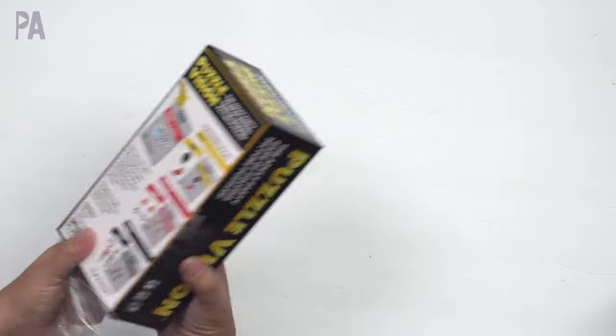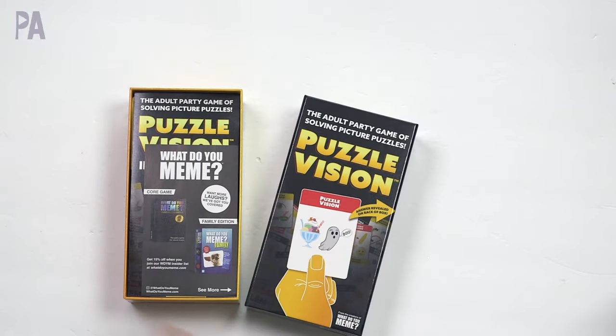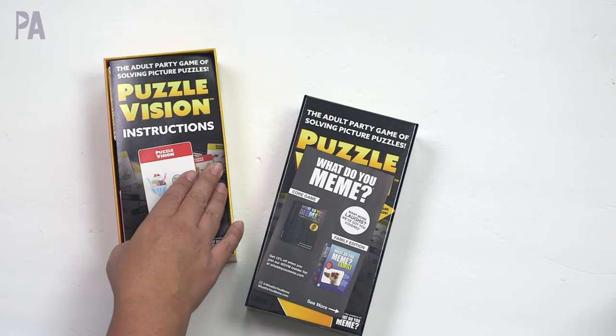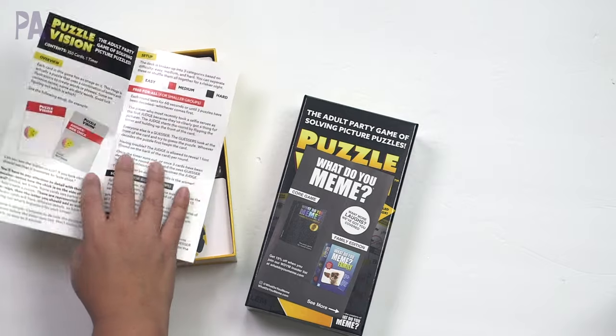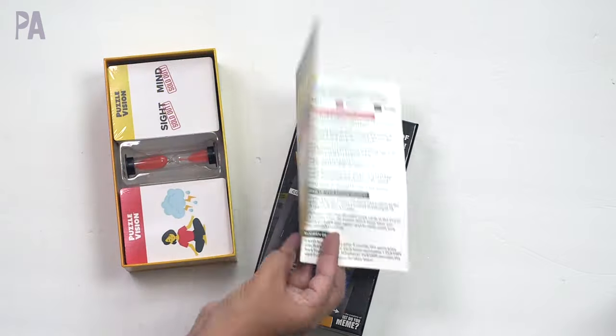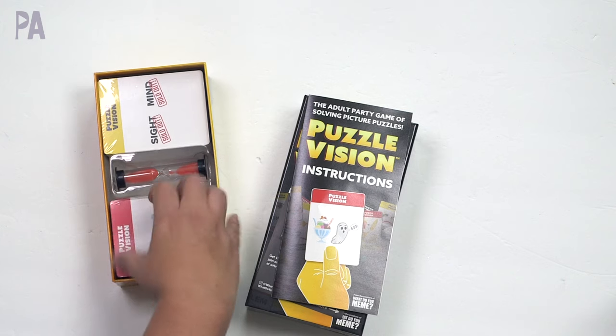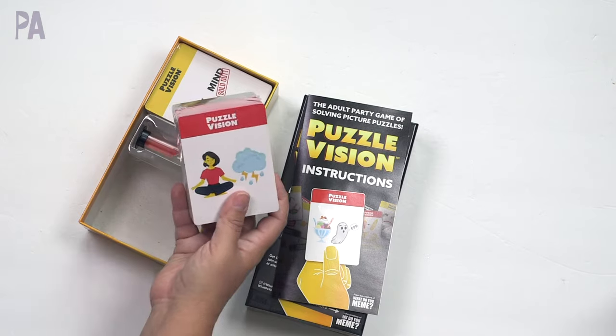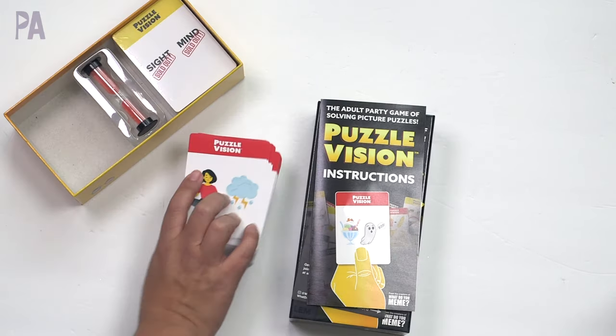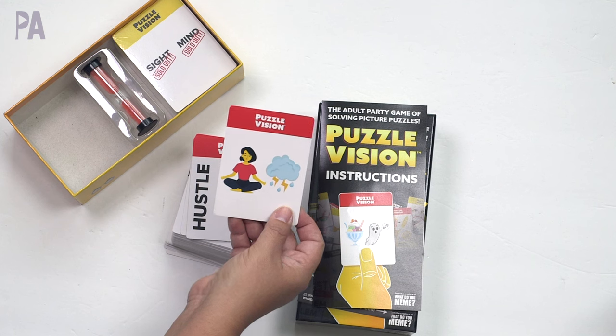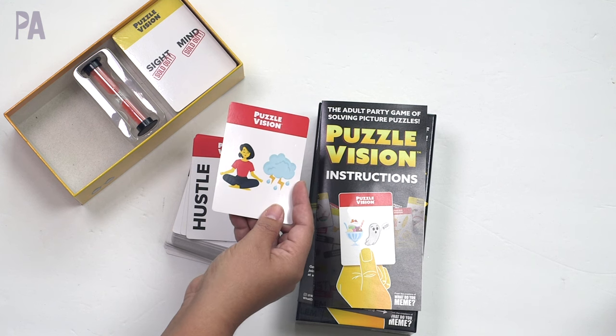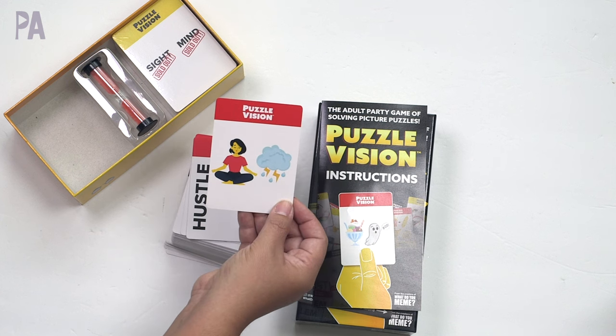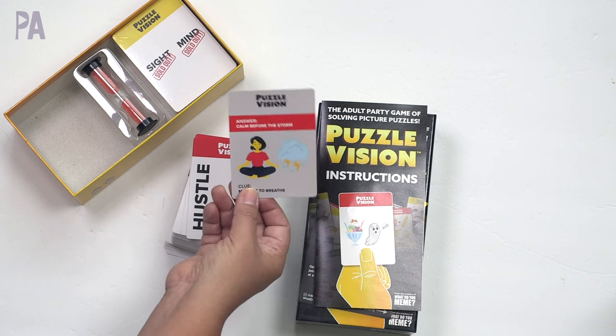This one says it's for 17 years of age and older. An adult party game, it says. And you're supposed to solve picture puzzles. I'm not going to go into the whole explanation of the game, but I am going to look at the contents. Last time I did a review on these, I gave them a thumbs up because they were a really great value. So these are kind of like where they have the pictures. Easy, medium, hard levels, it looks like. And you have to figure out what, there's a little timer there, what the picture means by looking at it. And then they put the answer on the back.